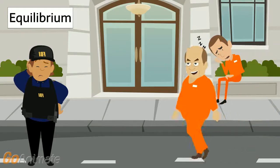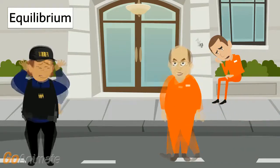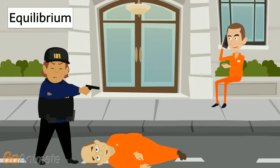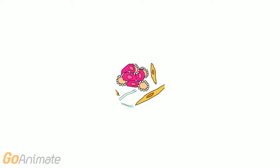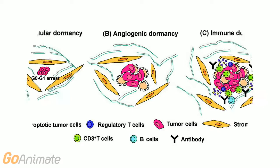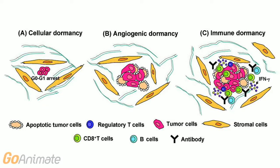To go back to our analogy, the cops are becoming less and less effective at capturing the robbers, and the robbers take some time to regroup and find resources to survive. There are mechanisms still in place to prevent exponential tumour growth: cellular dormancy of the tumour cells, angiogenic dormancy in which the tumour is not capable of sustaining a blood supply, and immune dormancy in which the level of the anti-tumour response is matched by tumour development.